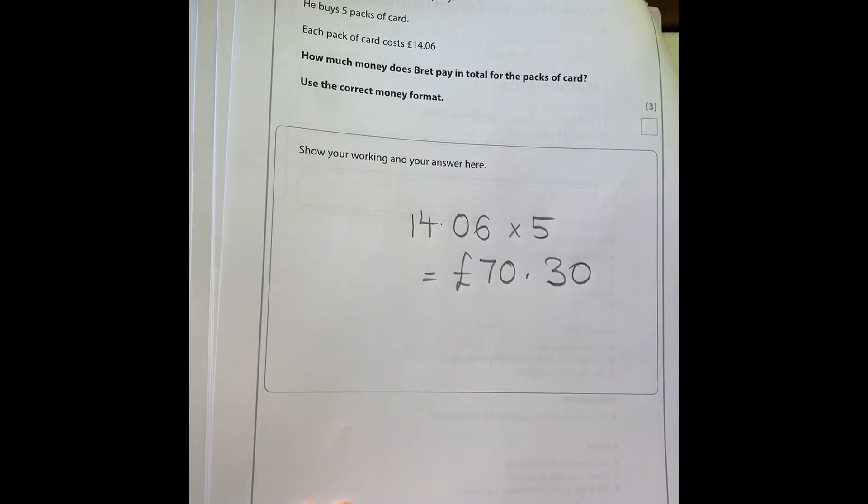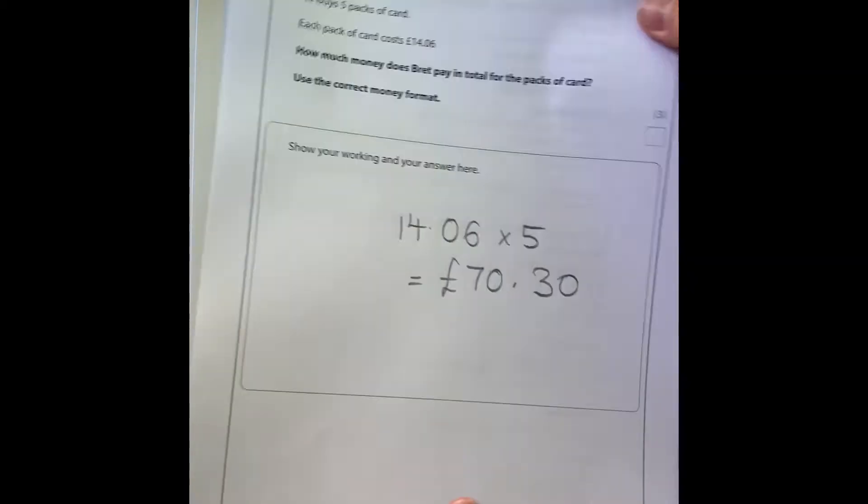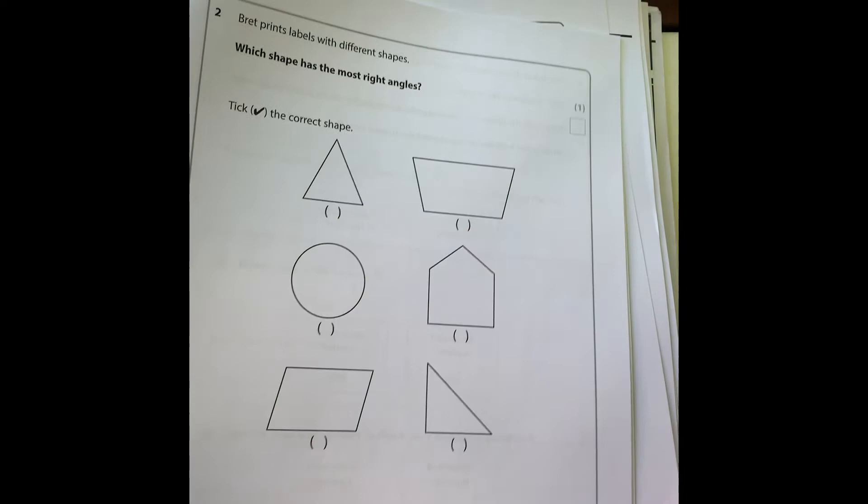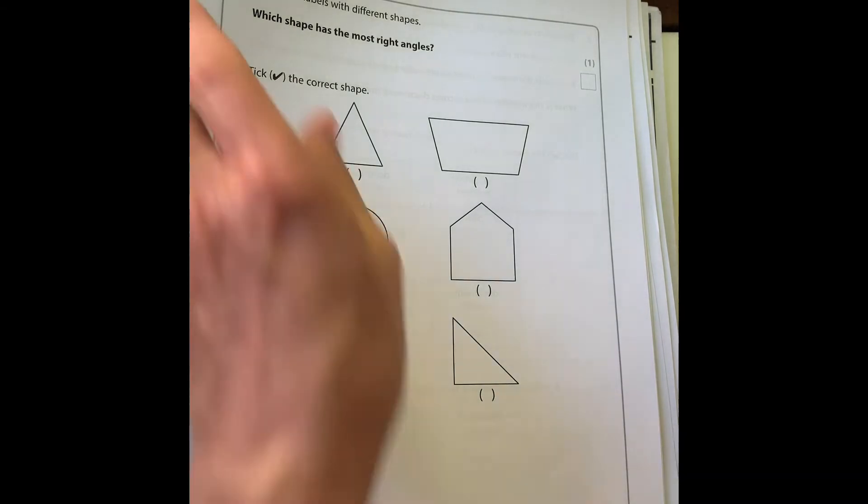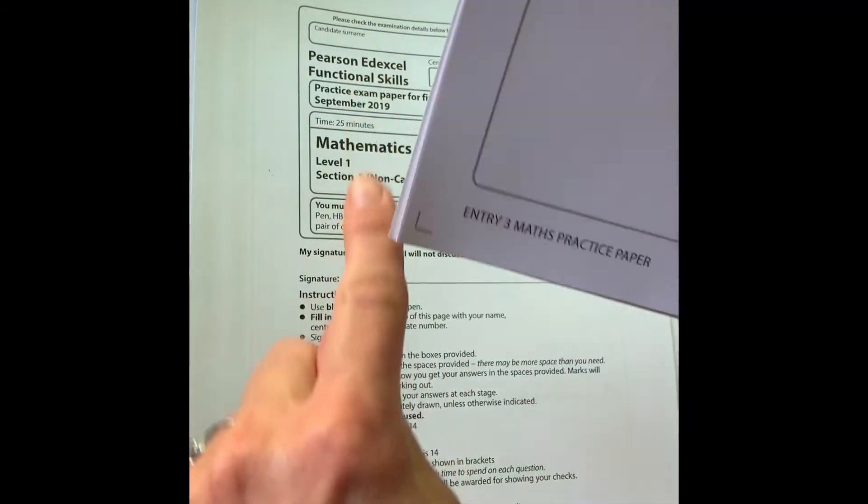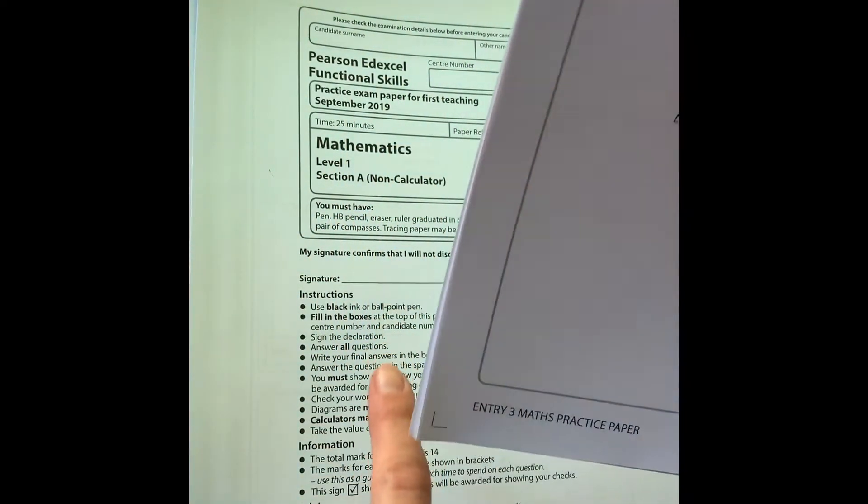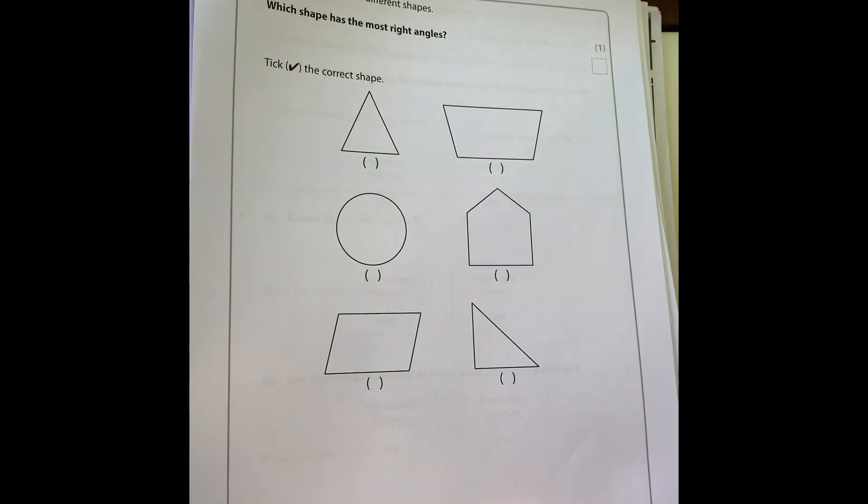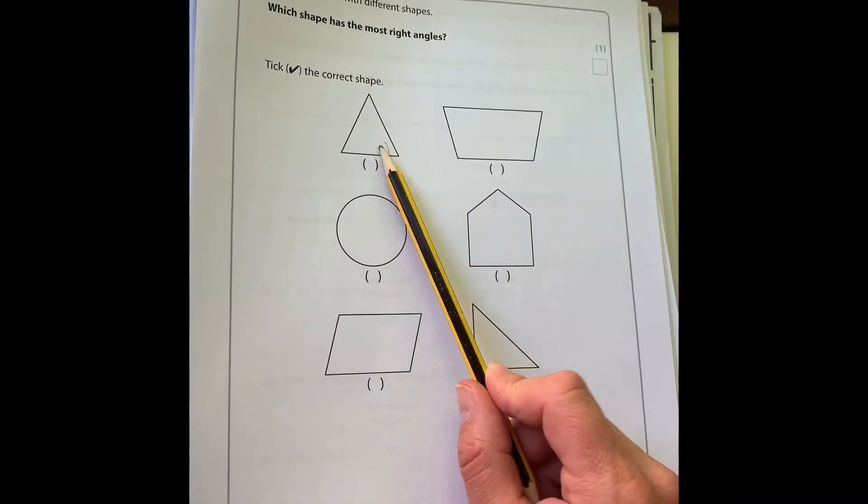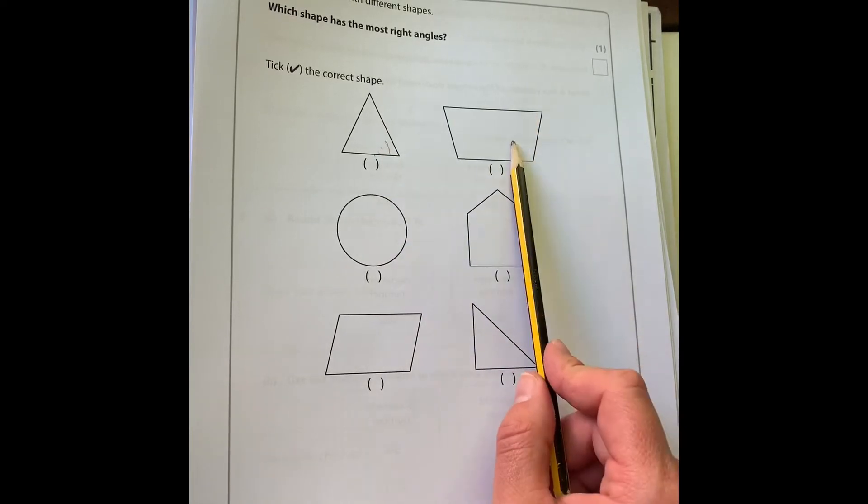Brett prints labels in different shapes. Which shape has the most right angles? So a right angle is the corner of a page, otherwise sometimes called 90 degrees. We need to see which shape has got the most.